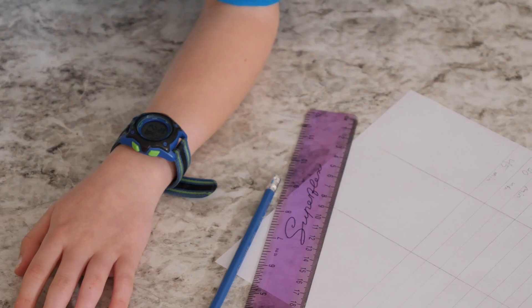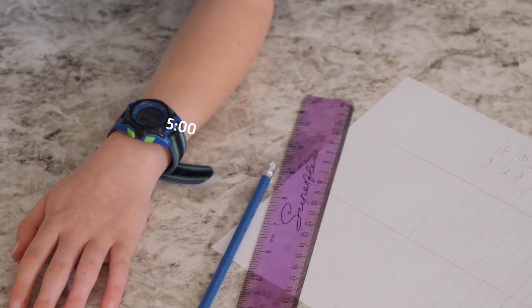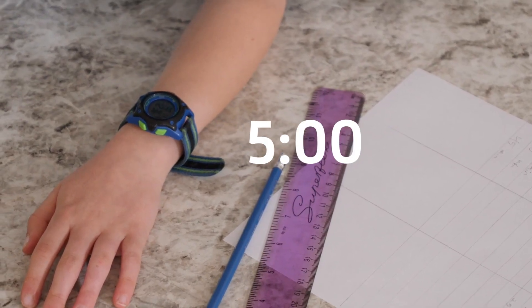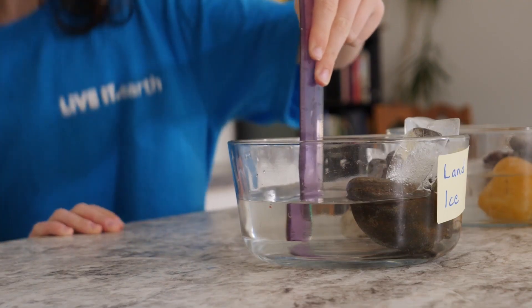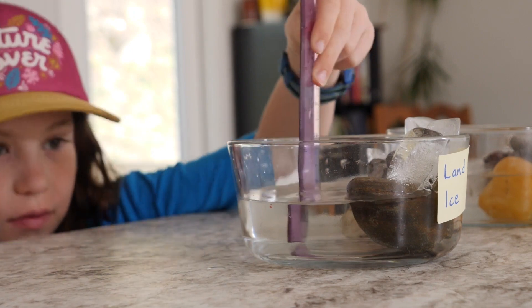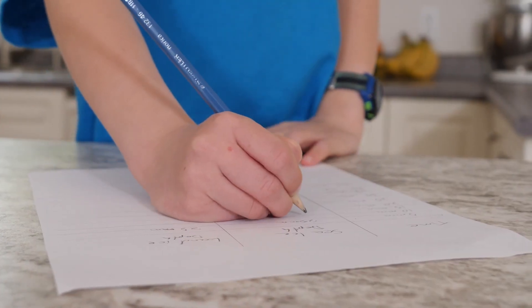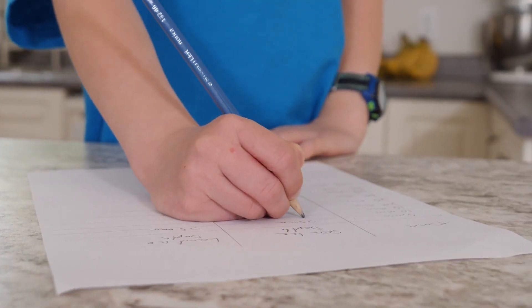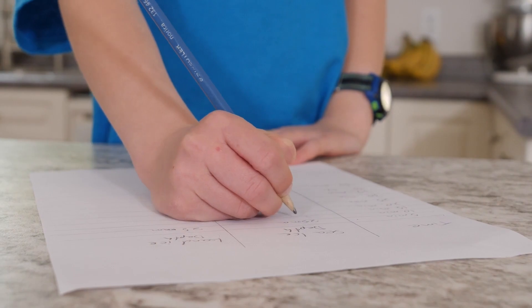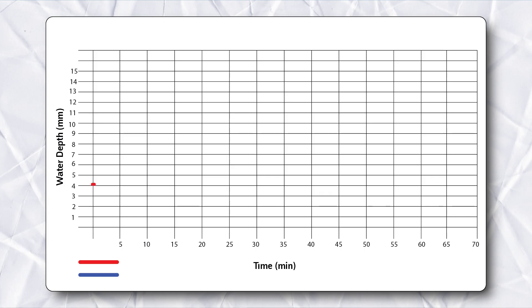Now let's observe. At five-minute intervals, use your ruler to measure the depth of the water for each container. Record your findings using the chart provided or in a notebook. When all of the ice has melted and you have taken your final measurements, chart your findings on a line graph.